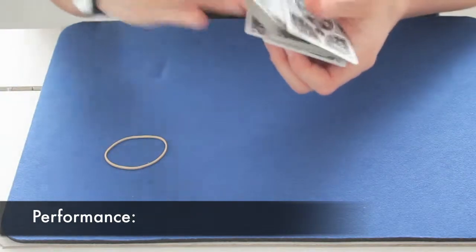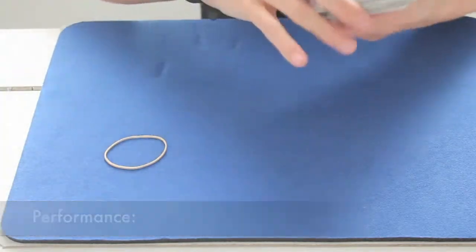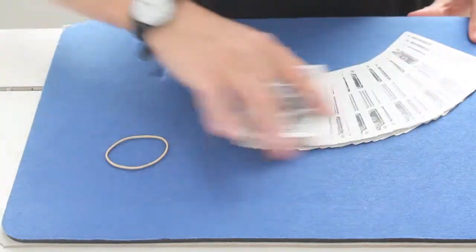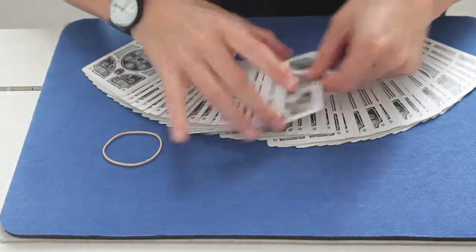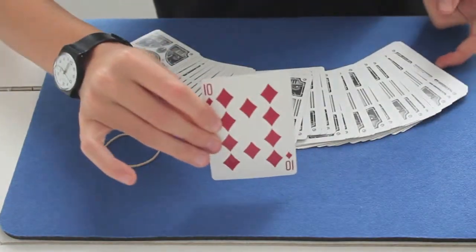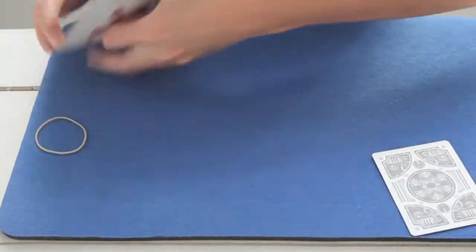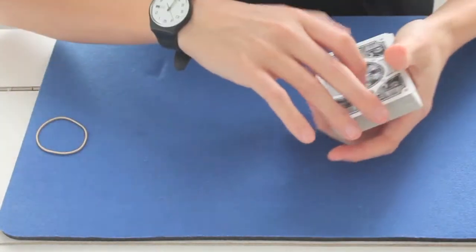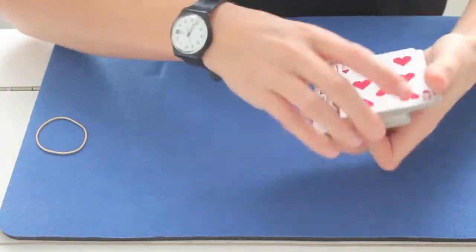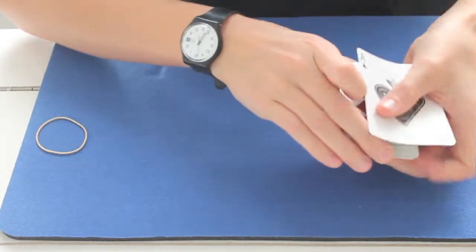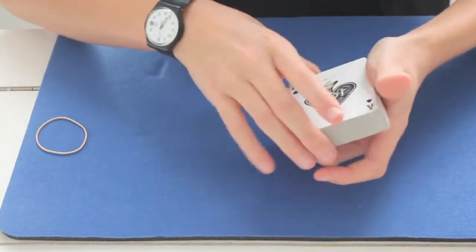First, the spectators shuffle the cards as much as they want. Then they pick one, let's say this one for example. You see it? Great. And now I lose it in the deck like this. And I do a cut.